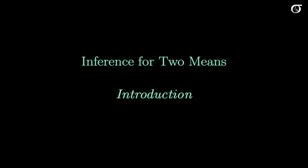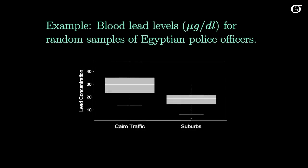Let's talk about inference for two means. We have blood lead levels for random samples of Egyptian police officers. This group over here are traffic officers in Cairo, and this group over here are officers from the suburbs. The variable of interest is lead concentration in the blood. It appears that the Cairo officers have a larger blood lead level concentration than those in the suburbs, and we might want to investigate whether that is a real difference.